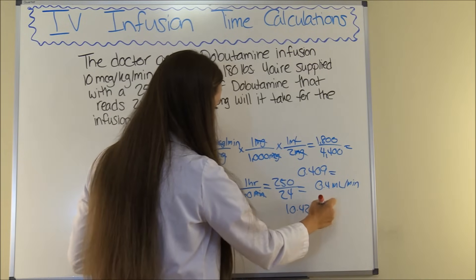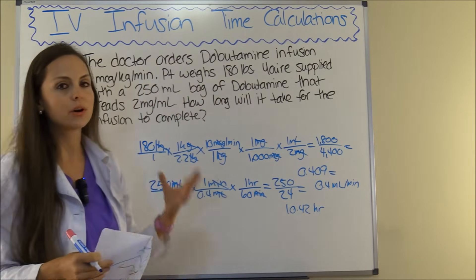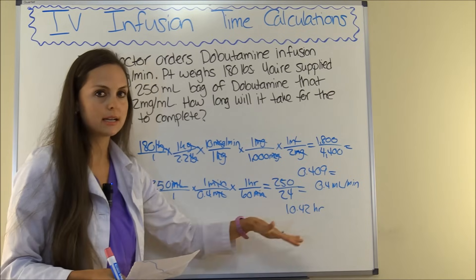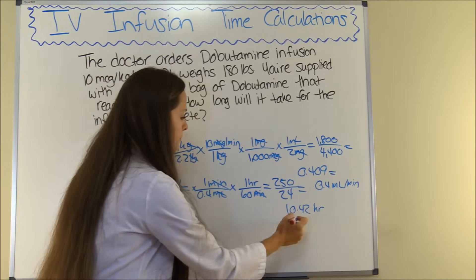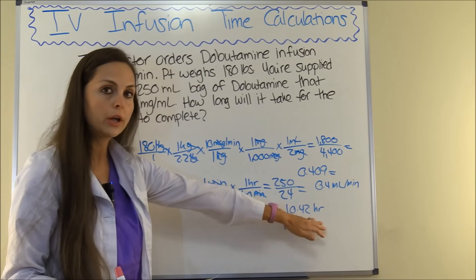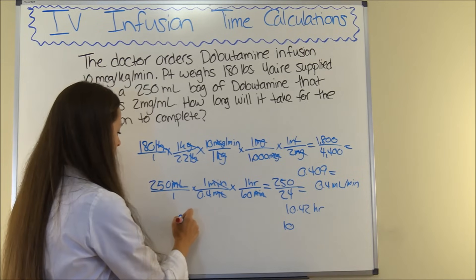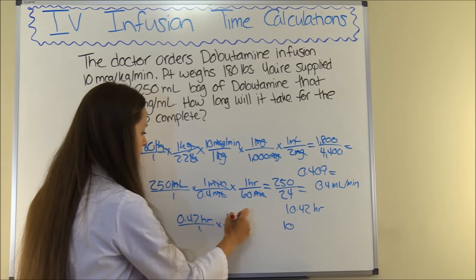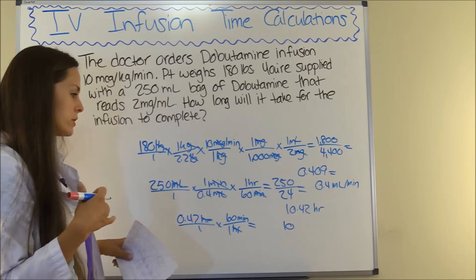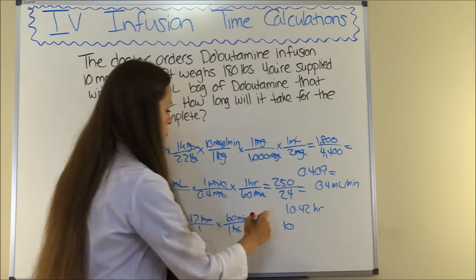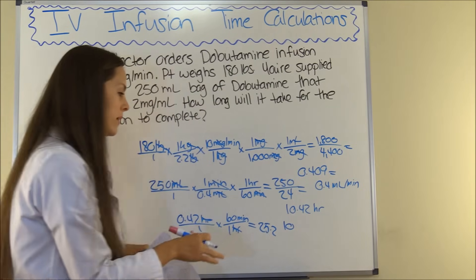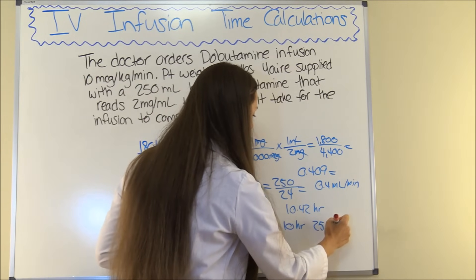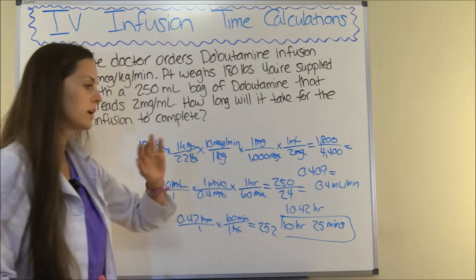We'll leave that in hours, but remember we need hours with minutes because we have remaining fractions of hours. So we know we're at 10 hours — now let's convert 0.42 to minutes. So 0.42 hours times 60 minutes per hour gives us 25.2, which we round to 25. So it's going to take 10 hours and 25 minutes for this infusion to complete.